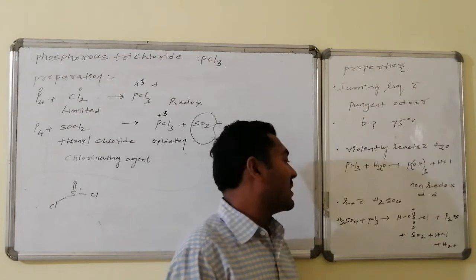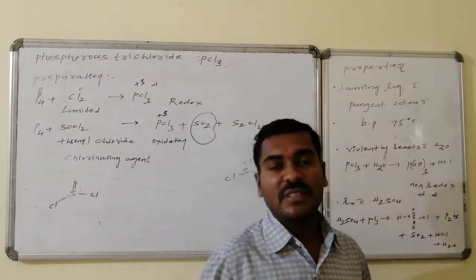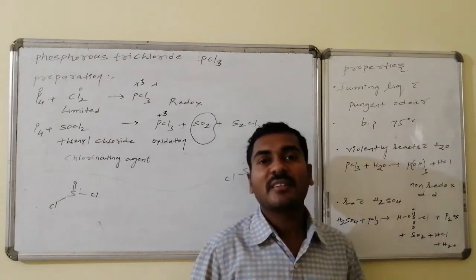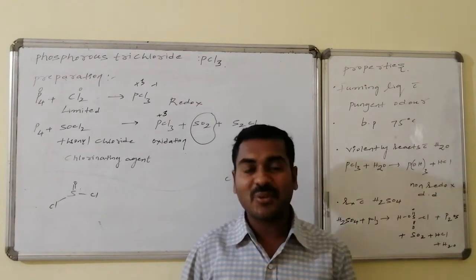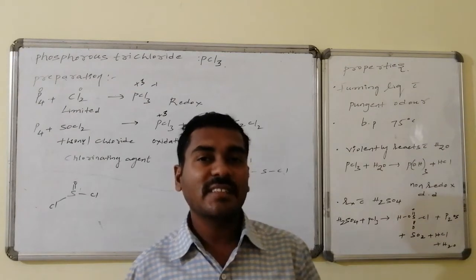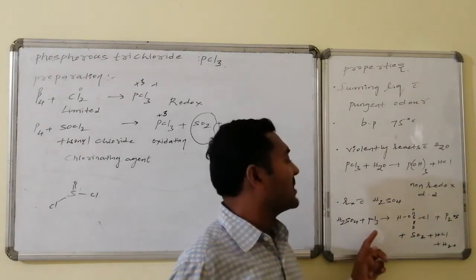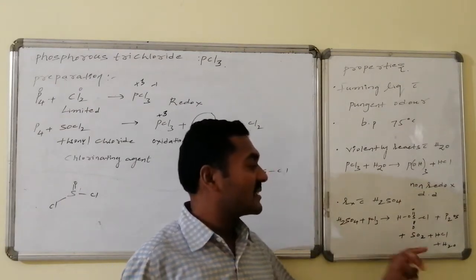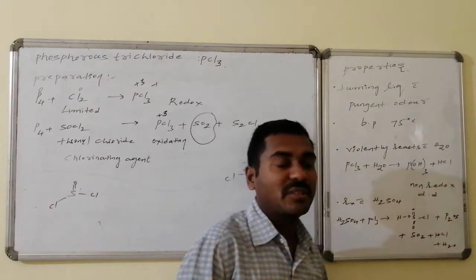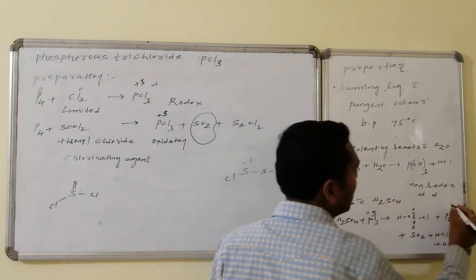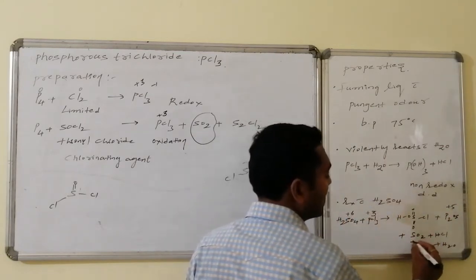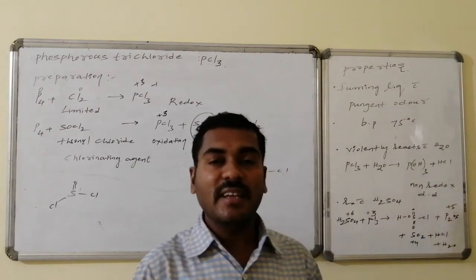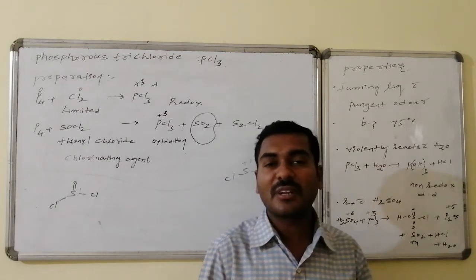Reaction with sulfuric acid: PCl3 reacts vigorously with H2SO4. PCl3 also acts as a chlorinating agent, replacing one OH bond with chlorine to give chlorosulphonic acid. In this reaction there is no change in oxidation number — no oxidation and no reduction in the chlorosulphonic acid formation step. However, PCl3 undergoes oxidation to form P2O5 (phosphorus pentoxide) while sulfur at plus 6 oxidation state undergoes reduction to form sulfur dioxide. HCl and water molecules are also formed. This is a redox reaction, with entropy enhancement via SO2 formation driving it forward.